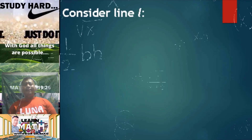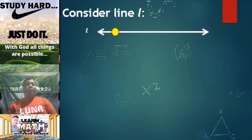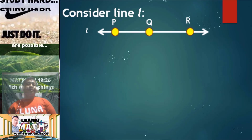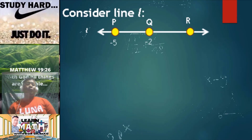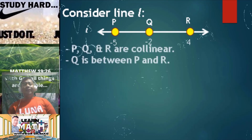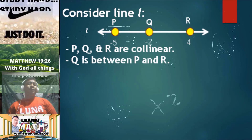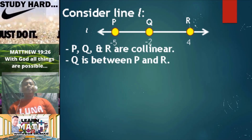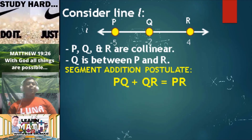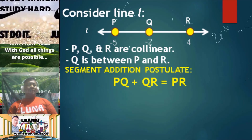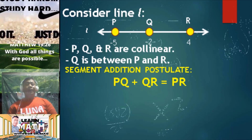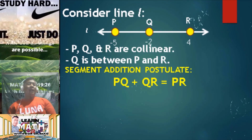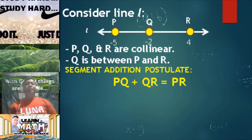Let's consider again line L. From here, we have points P, Q, and R with the following coordinates: point P is negative 5, point Q is negative 2, point R is positive 4. Take note, points P, Q, and R are collinear points since they lie on the same line. Point Q is between P and R. Consider the segment addition postulate: segment PQ plus segment QR is just equal to segment PR.